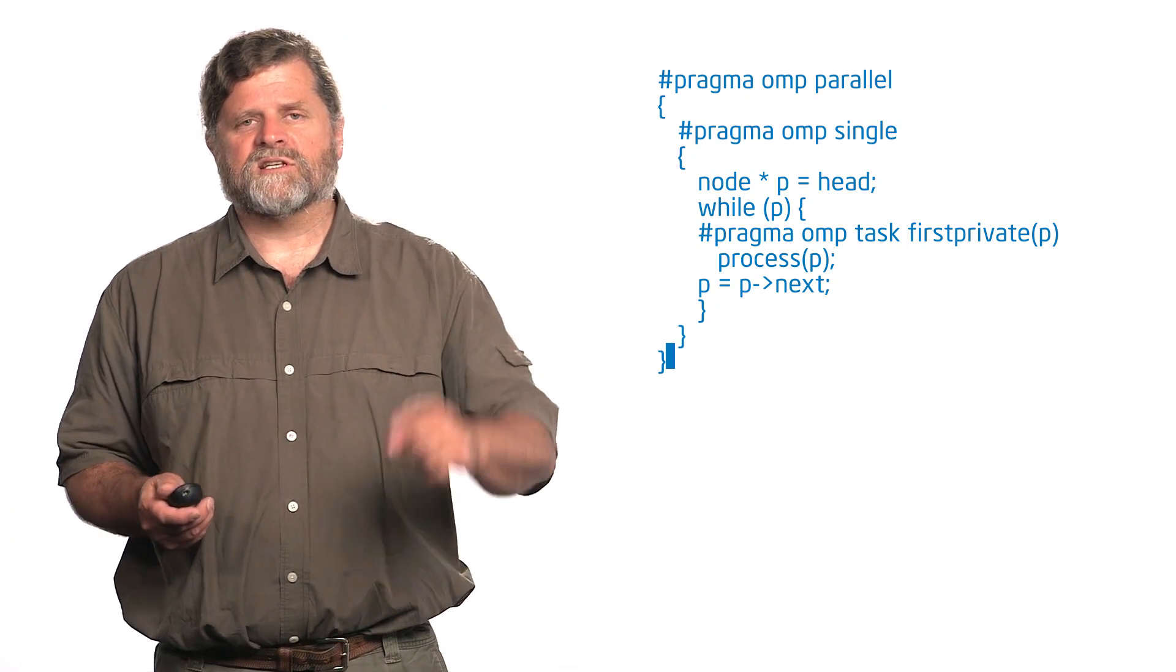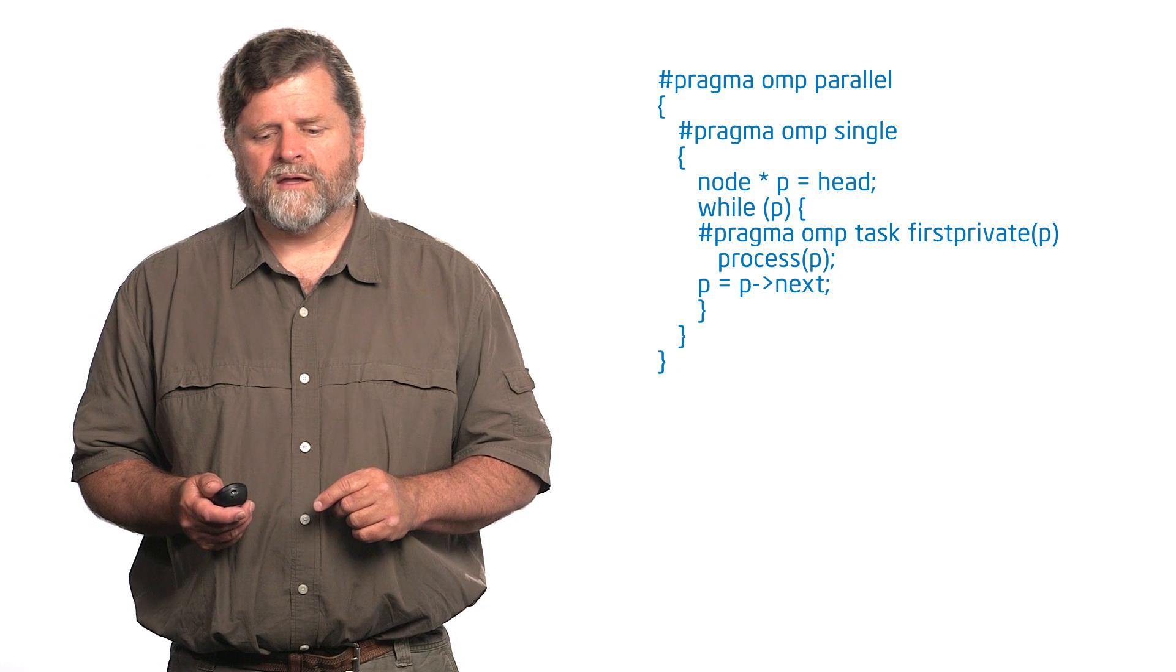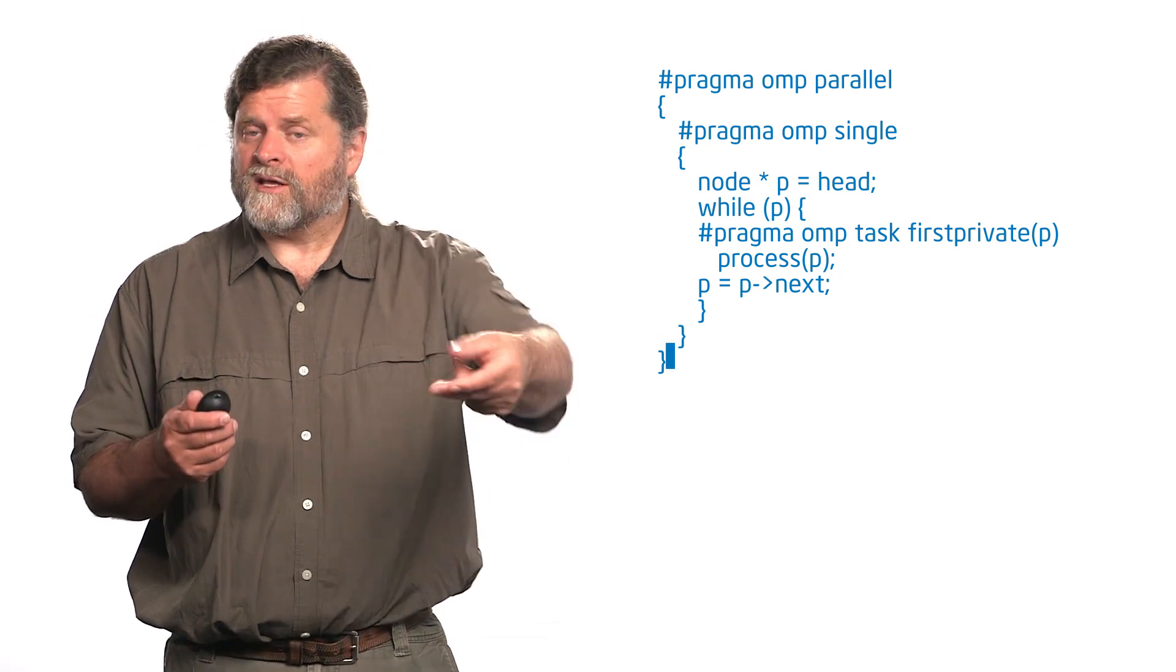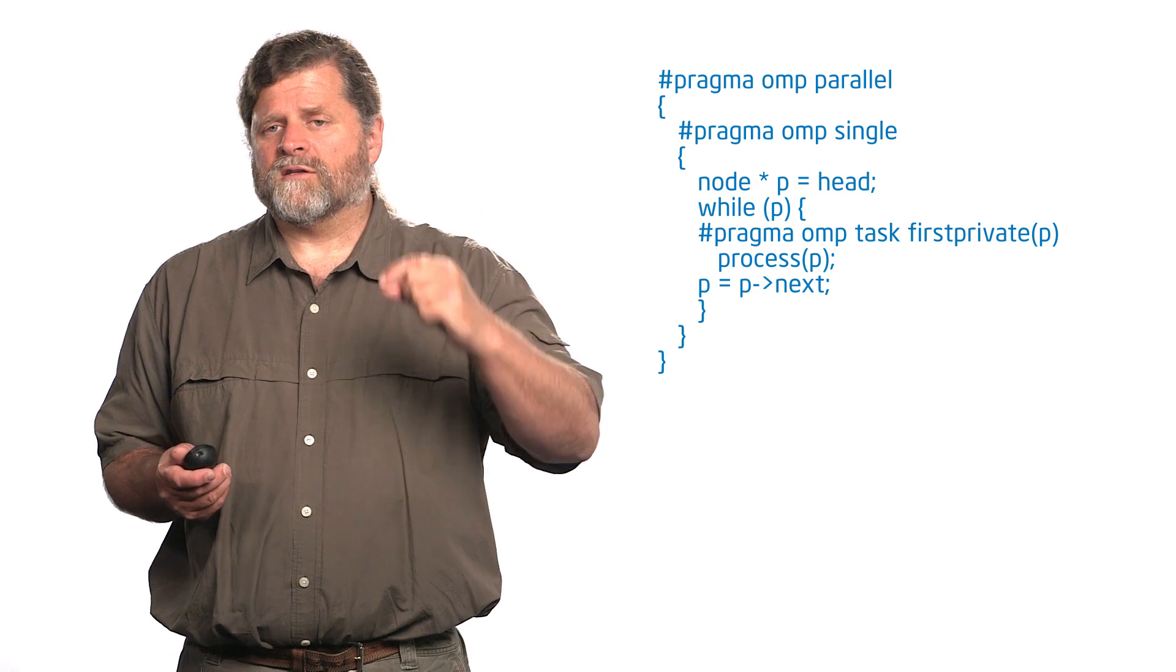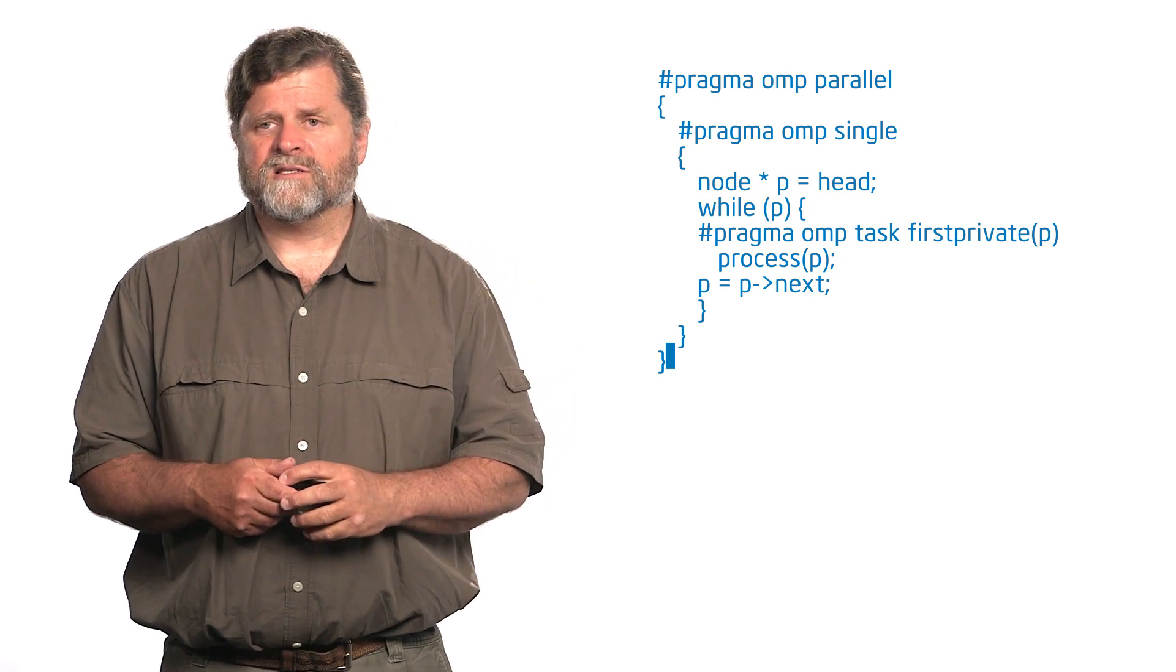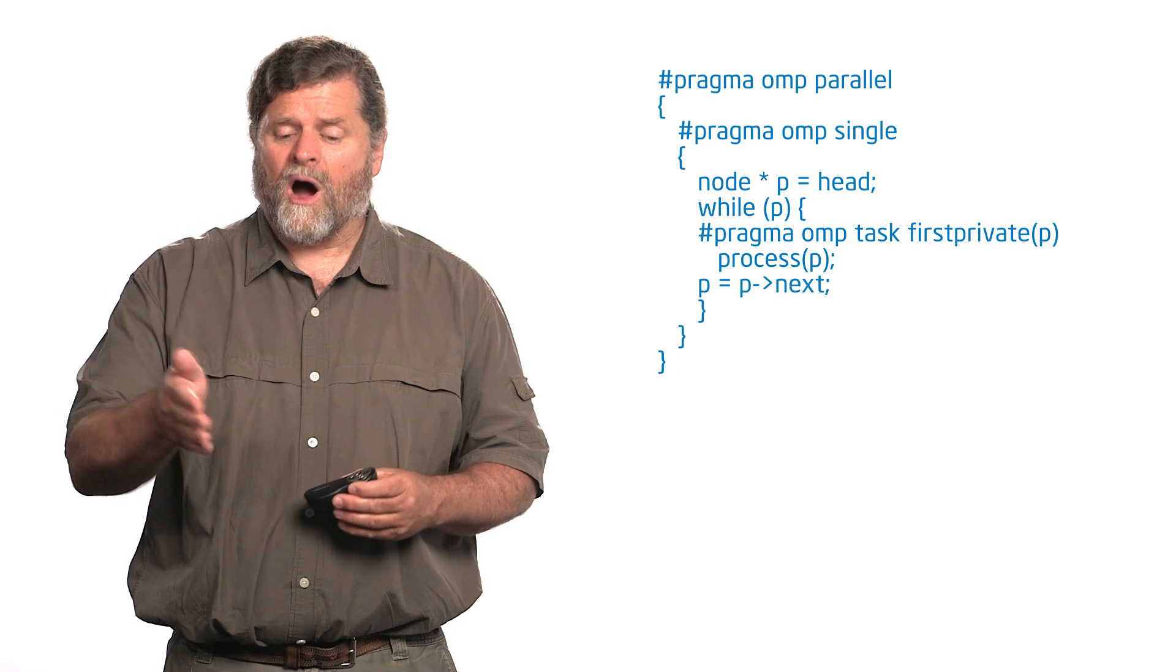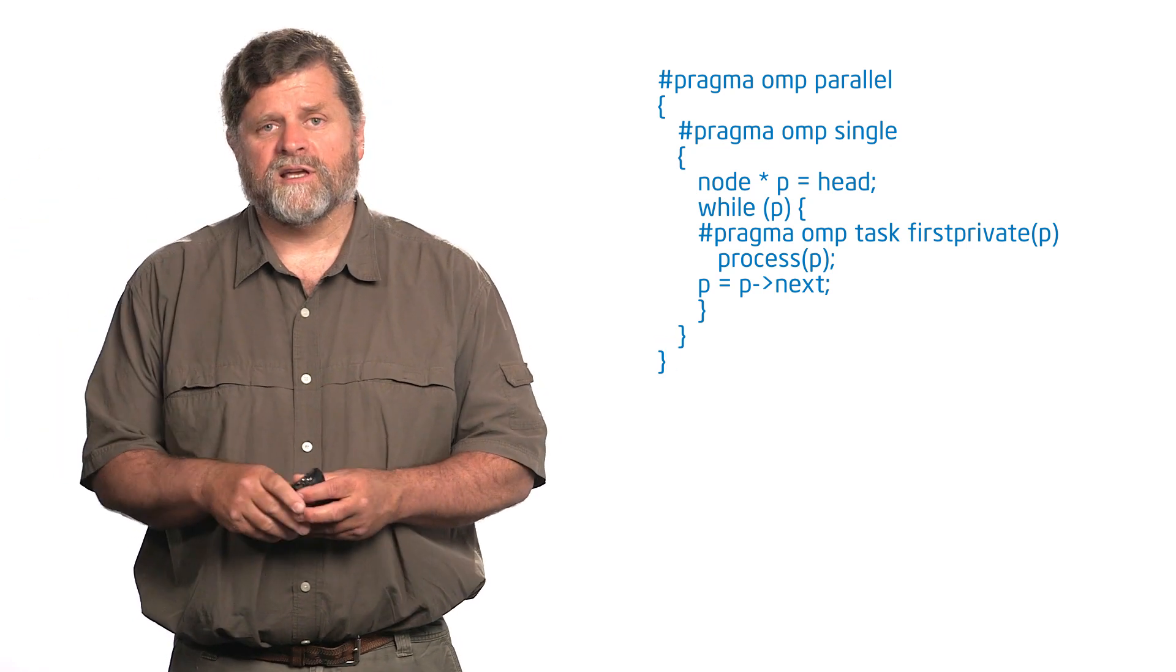I have a pragma-OMP single, so it's going to select one thread. I'm going to create a private variable because I'm creating it inside the scope of the single, and it's going to create a pointer pointing to the head of my list. Now I have my while loop, and I'm going to walk through that list. I'm going to traverse the list.